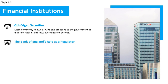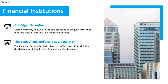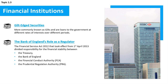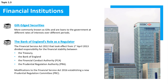The Bank of England's role as a regulator: until 1998 the Bank held responsibility for supervision and regulation of the UK banking sector before it was transferred to the Financial Services Authority (FSA). The Financial Services Act 2012, which took effect from 1 April 2013, divided responsibility for financial stability between the Treasury, the Bank of England, and two new regulators: the Financial Conduct Authority (FCA) and the Prudential Regulation Authority (PRA). This act was later modified by the Financial Services Act 2016, which provided more powers to the bank by bringing the PRA within it and establishing a new Prudential Regulation Committee (PRC).